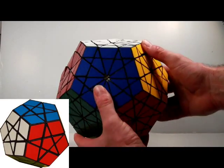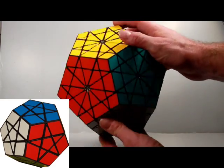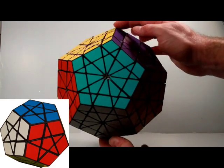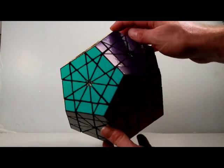His puzzle was a deep cut corner turning dodecahedron. So this is also a corner turning dodecahedron, but the cuts are not deep.